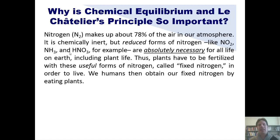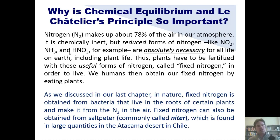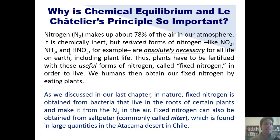Plants have to be fertilized with these useful forms of nitrogen, called fixed nitrogen, in order to live. We humans obtain our fixed nitrogen by eating plants, or by eating other animals that have obtained it from eating plants. In nature, fixed nitrogen is obtained from bacteria that live in the roots of certain plants and make it from N2 in the air. Fixed nitrogen can also be obtained from saltpeter, commonly called niter, which is found in large quantities in the Atacama Desert in Chile.